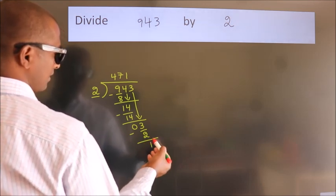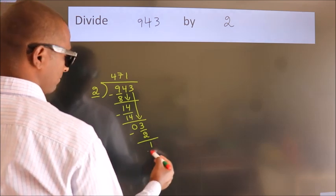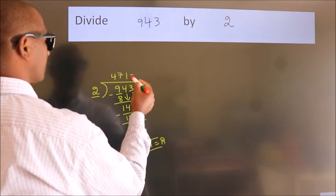After this, no more numbers to bring it down. So, we stop here. This is our remainder. This is our quotient.